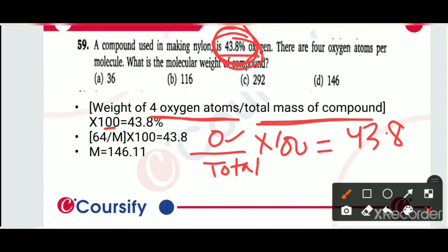So oxygen's weight is 4 atoms. What happens in 1 atom? 16. What happens in 4 atoms? 64. Total weight we don't know. Total weight we have to find.